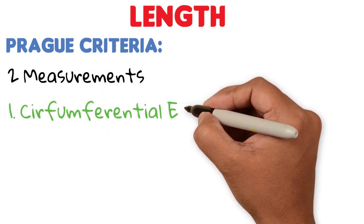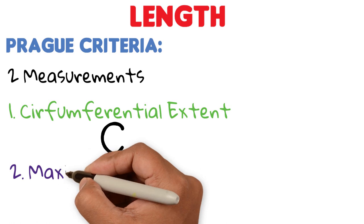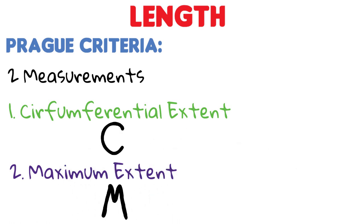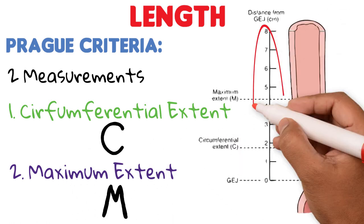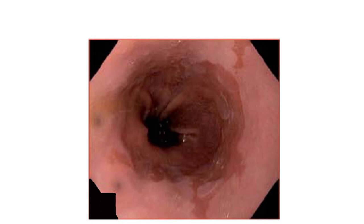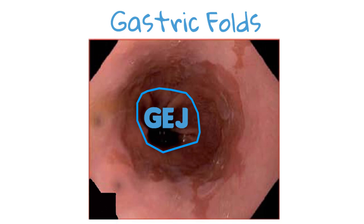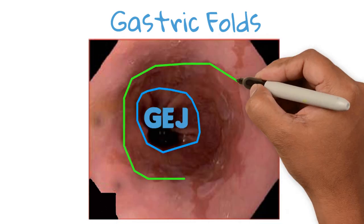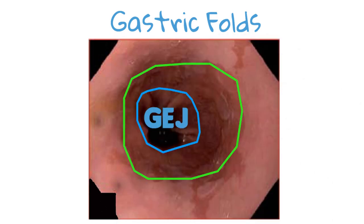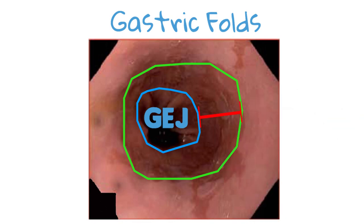Number one: the circumferential extent, represented by the letter C; and number two: the maximum extent, represented by the letter M. It is measured in centimeters starting at the gastroesophageal junction. For example, in this endoscopy, we first identify the gastric folds to locate the gastroesophageal junction. Then we locate the upper limit of the columnar epithelium lining the entire esophageal circumference. The distance between the gastroesophageal junction and this upper limit will be C — in this case, 2 centimeters.